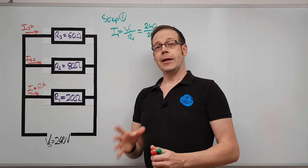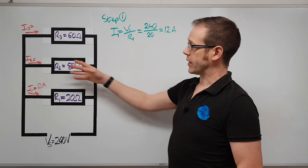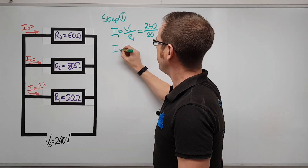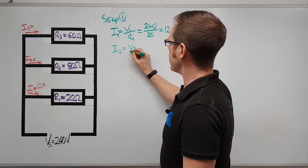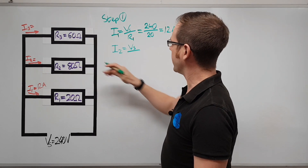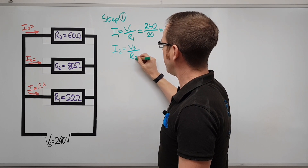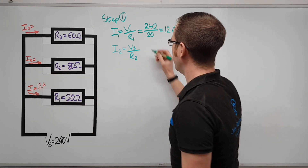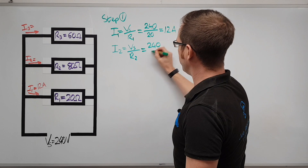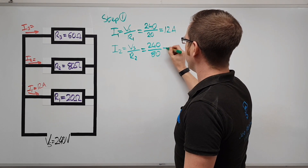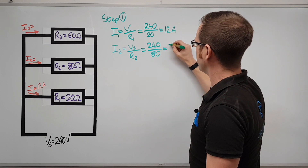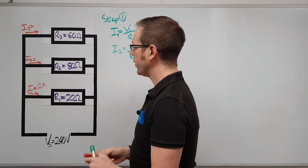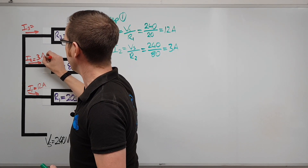Now we calculate the remaining currents. I2 equals the supply voltage divided by R2: 240 divided by 80 = 3 amps. So flowing into R2 we have 3 amperes.